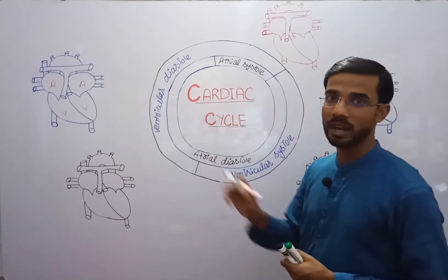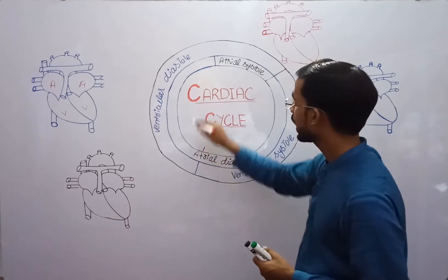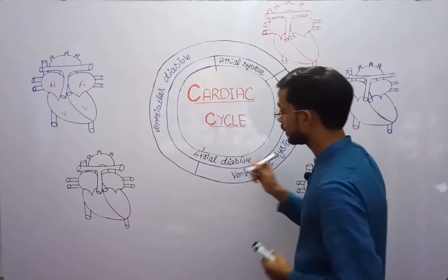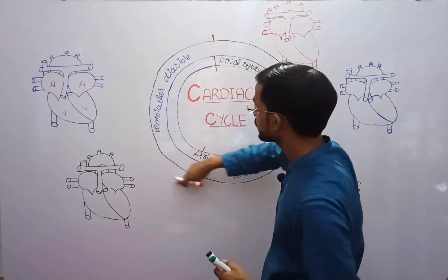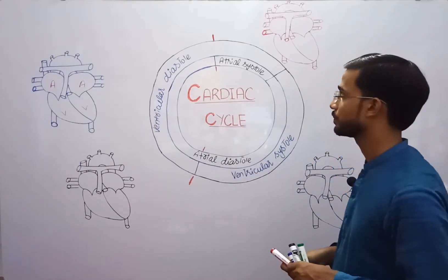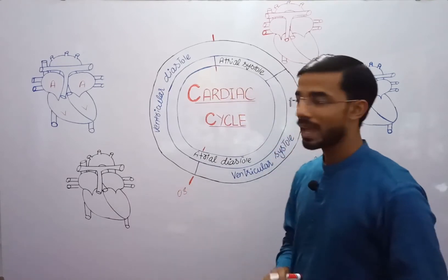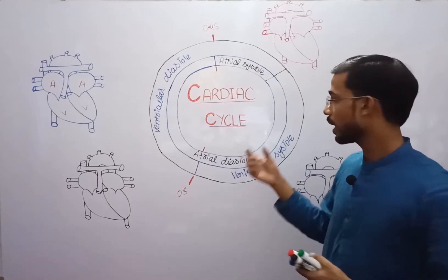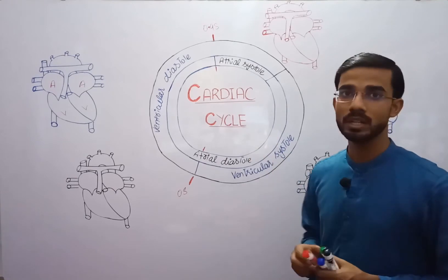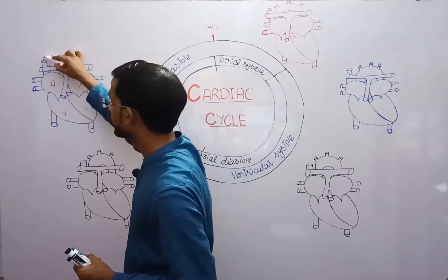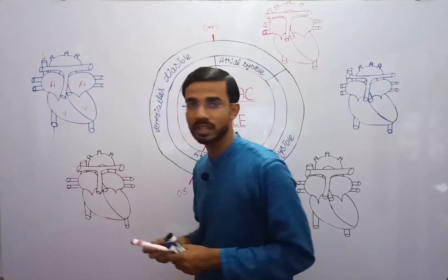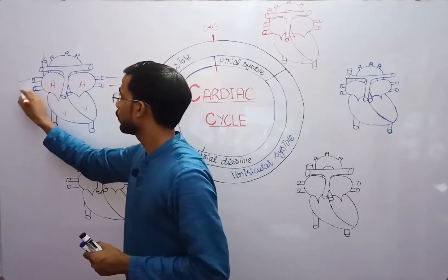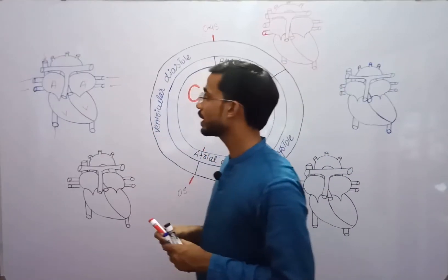When the ventricles and atria are in a relaxed state, this portion represents atrial diastole, and the outer portion represents ventricular diastole. This phase starts at 0 seconds and takes 0.4 seconds. During this time, both atria and ventricles are in diastole, and blood moves into the atria from the superior vena cava, the inferior vena cava into the right atrium, and from the pulmonary veins into the left atrium.